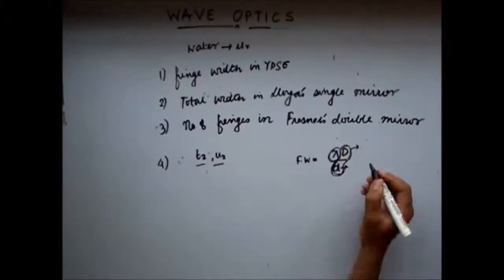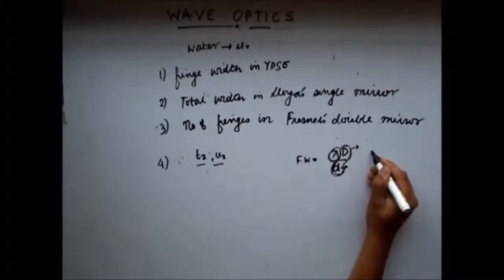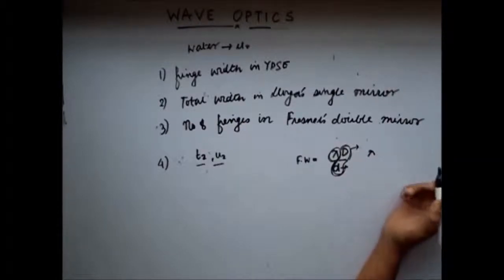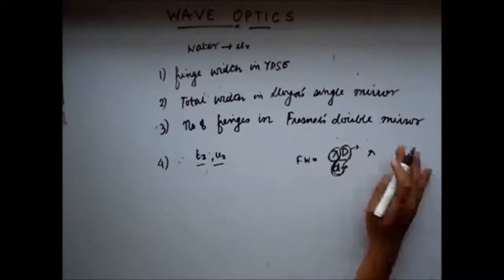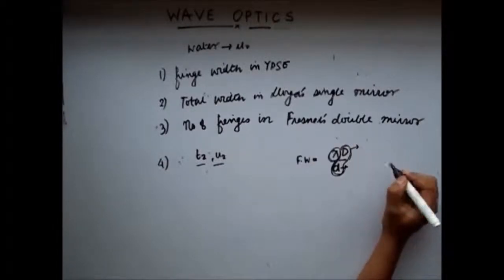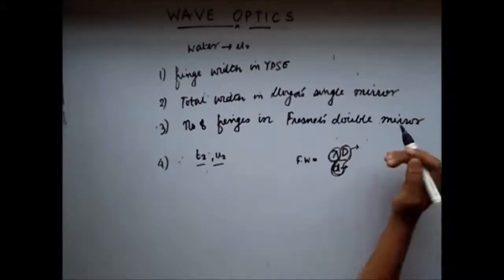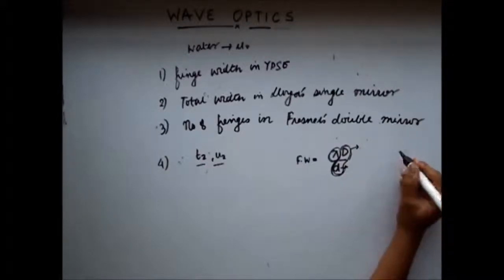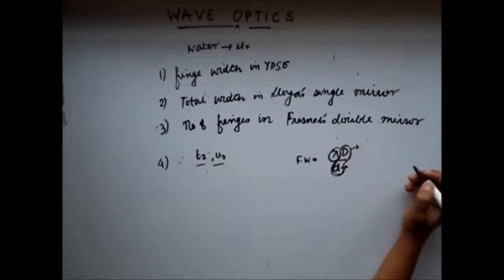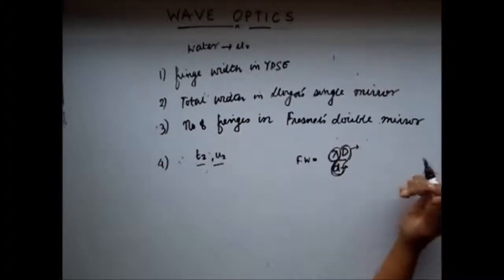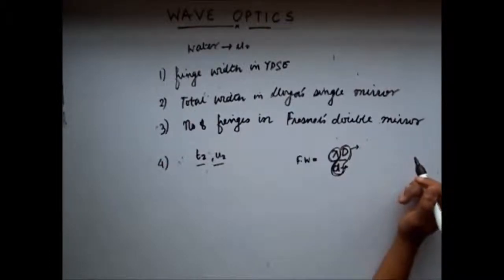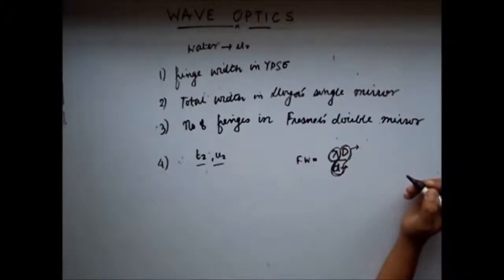You know that lambda decreases with medium. When light moves from rarer to denser medium, the velocity of the light wave changes with respect to the refractive index. If the second medium is denser, the velocity decreases. If the second medium is rarer, the velocity increases. A similar thing happens with wavelength.